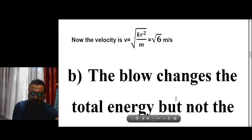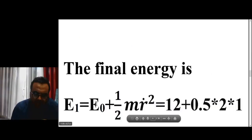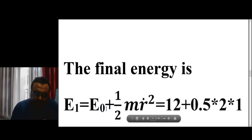Let us find the values. The initial energy is 12 joules, as given. The final energy is the initial energy plus the extra kinetic energy from the blow. The potential energy remains constant because any change in the spring is incorporated in the r value. So the total final energy is the initial energy plus (1/2)m·r-dot², which gives 13 joules as the final energy.